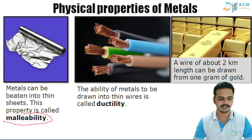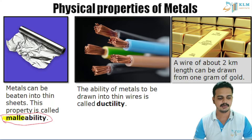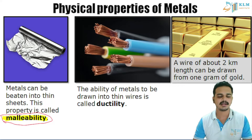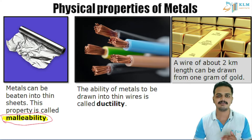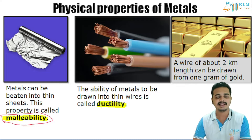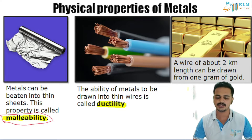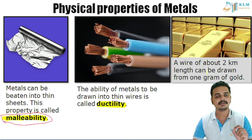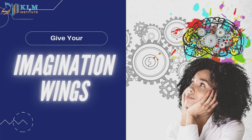Malleability is something you can see in everyday life. When your mom packs chapati or roti, she wraps it in aluminium foil. The ability of metals to be beaten down into thin sheets is known as malleability. The ability of metals to be drawn into thin wires is called ductility. Gold is both highly malleable and highly ductile — just one gram of gold can be drawn into a two kilometer length of wire.